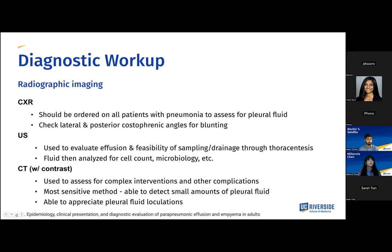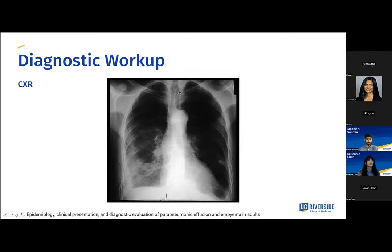Diagnostic workup includes a lot of radiographic imaging, including chest X-ray, ultrasound, and CT. For chest X-rays, they should really be ordered on all patients with pneumonia to assess for pleural fluid. We'll have an example of a chest radiograph showing loculated right parapneumonic effusion. On the chest X-ray, we want to check the costophrenic angles that we mentioned earlier for any blunting.